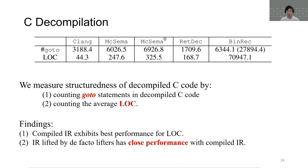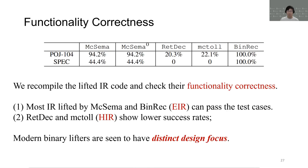For decompilation, we follow existing research and measure the structurliness of decompiled C code by counting the go-to statements and the average line of code. We find that compiled IR generally exhibits better performance than lifted IR, while IR lifted by Reddeck has a close performance with compiled IR.